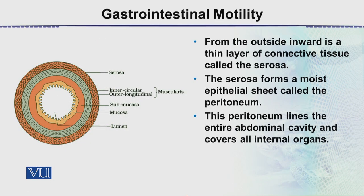From the outside inward: the outermost layer is the serosa, and next to it is the muscularis layer — the muscle layer. This consists of inner circular and outer longitudinal muscles. These are the longitudinal muscles — the outer muscles — whereas these are the inner circular muscles. Next is the submucosa, which is orange in color, and then the mucosa.